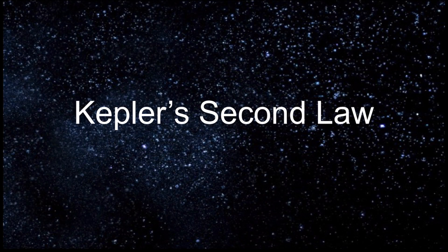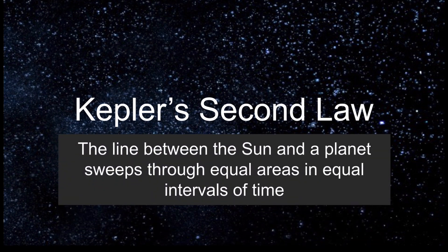In other words, during equal intervals of time, a planet will cover equal areas of space, regardless of where it is in its orbit, how fast it is moving, or the length of the imaginary line.